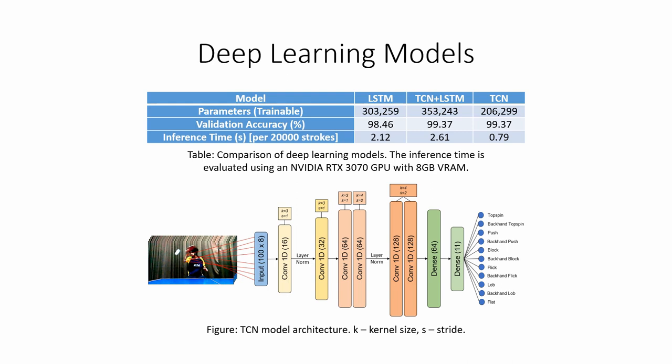For our deep learning approach, the temporal dimension remains intact. We compared three types of neural network architectures for stroke recognition: purely LSTM based network, a temporal convolutional network and a hybrid of temporal convolutional layers and LSTM layers. As shown in the table, we found that the purely convolutional TCN model gave us the best results with the least number of parameters and the fastest inference time compared to the other two.